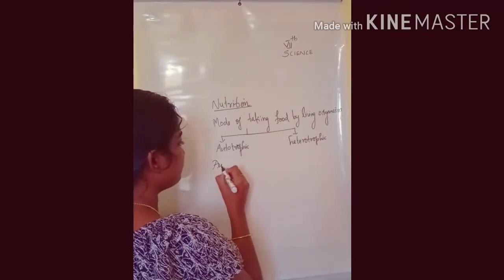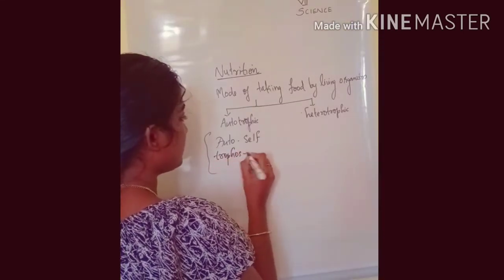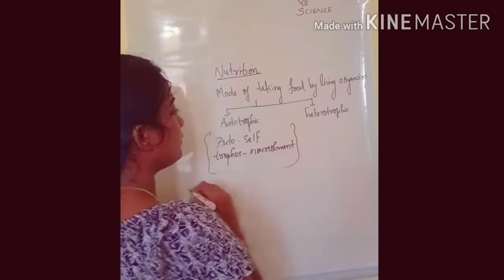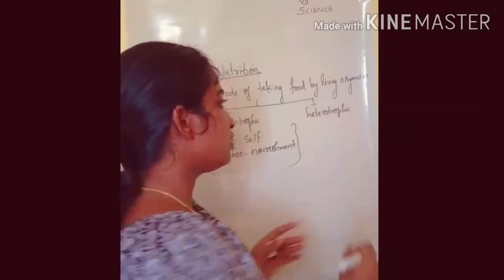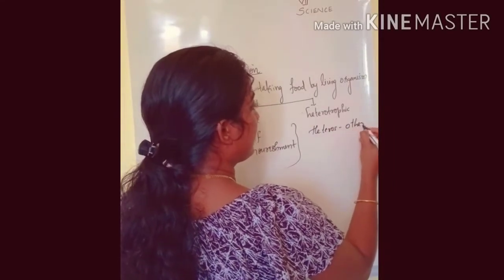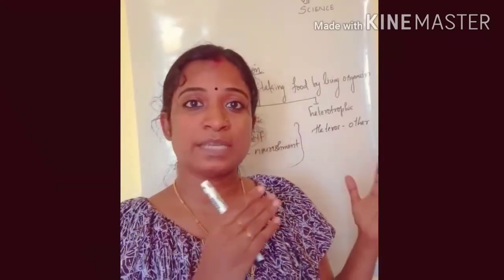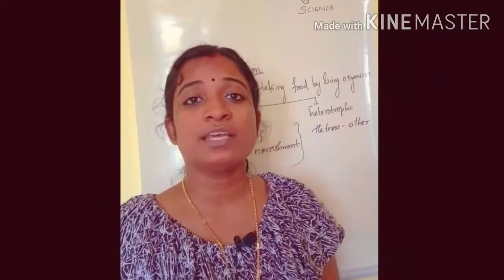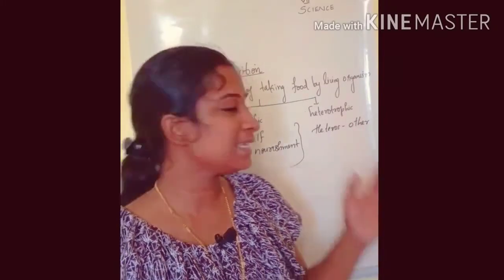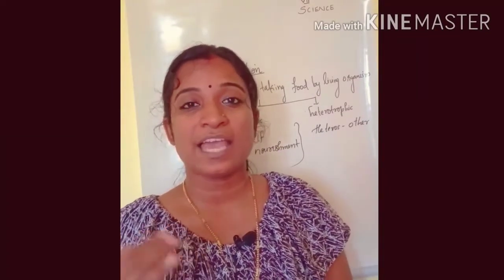Here, 'auto' means self and 'trophos' means nourishment, so autotrophic nutrition means self-nourishment. Whereas in heterotrophic nutrition, 'heteros' means other and 'trophos' means nourishment — so for their nourishment, this living organism depends upon others. That type of nutrition is known as heterotrophic nutrition.